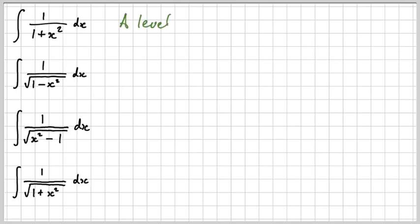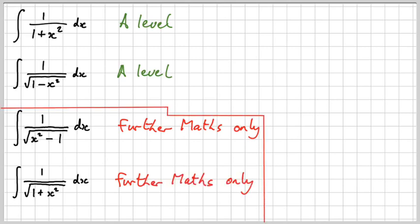Now, these two at the top are on the A-level specification and these other two require further math skills because they don't require trigonometric substitutions. They require hyperbolic trigonometric substitutions and those are just different as they require different identities to solve, so you don't need to worry about those. I've done a separate video for the further mathematicians on this set of skills. I'll put a link to that in the comments.